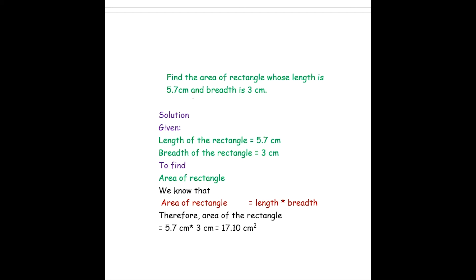The next question is: find the area of a rectangle whose length is 5.7 cm and breadth is 3 cm. We want to find the area. The formula for area of a rectangle is length into breadth. So we multiply 5.7 cm into 3 cm.